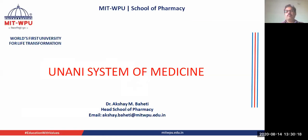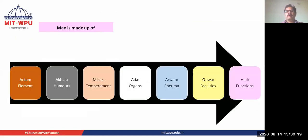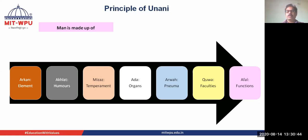Unani system of medicine. As per the Unani system, everything in the universe is made up of four elements. These are the basic elements called Arkan. These elements are indivisible matter which provide the primary components for the human body and others. Everything in the universe is composed of four basic elements in varying amounts and proportions.